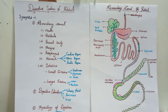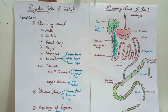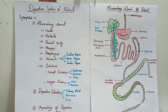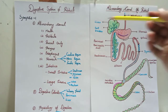The digestive system is the group of organs that break down the food in order to absorb its nutrients. The nutrients are used as fuel to keep all body systems working. The digestive system is uniquely designed in the rabbit as it is a herbivorous animal, so it absorbs the nutrients consumed from plant sources.